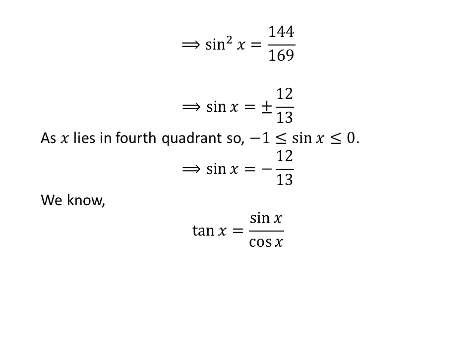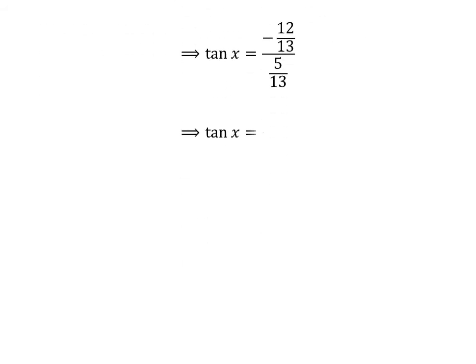As we know the values of sine of x and cosine of x, let us find the value of tangent of x, as tangent of x is equal to sine of x upon cosine of x. Plugging in the values, tangent of x is equal to minus 12 upon 13 divided by 5 upon 13. Cancelling the common factor of 1 upon 13 gives us tangent of x is equal to minus 12 upon 5.